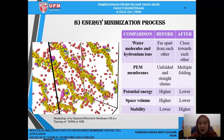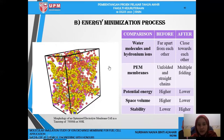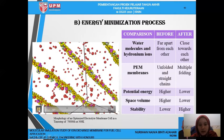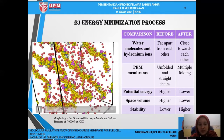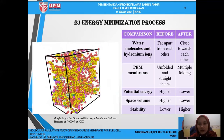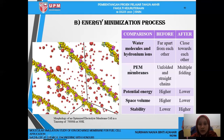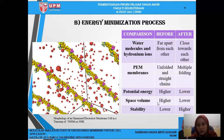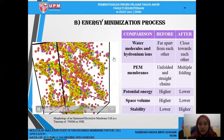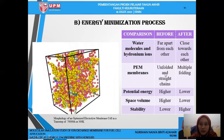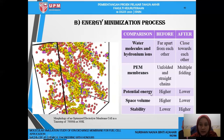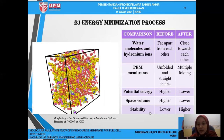After constructing the membrane, we undergo the energy minimization process. This is the morphology of an optimized electrolyte membrane cell at a time step of 70,000 femtoseconds at 300 Kelvin. As you can see, water molecules and hydronium ions are far apart from each other while the PEM membrane is unfolded. The water molecules and hydronium ions are shown in red, while the PEM membrane is shown in yellow. The potential energy and space volume will be higher and atom stability will be lower. However, after the energy minimization process, the water molecules will be close together while the PEM membrane will become multiply folded, and the potential energy and space volume will become lower, thus the stability of atoms will become higher.